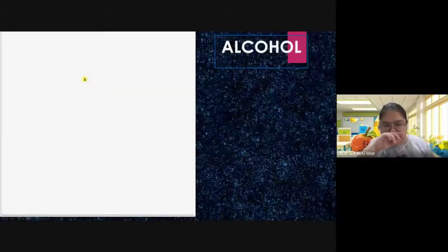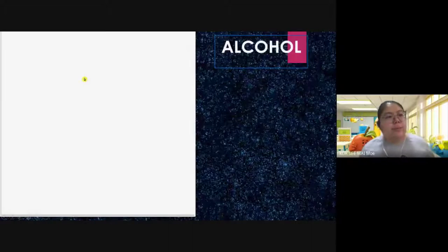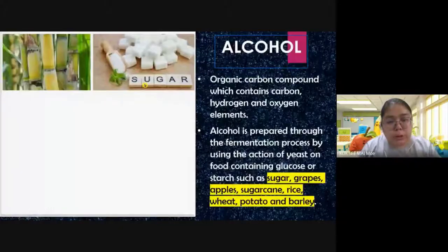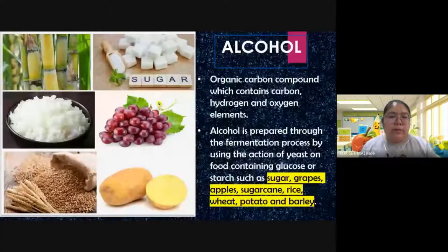Sugar cane also has sugar and can be used to build alcohol. These all contain carbohydrate — or you can say sugar — and anything that is sweet can produce alcohol.